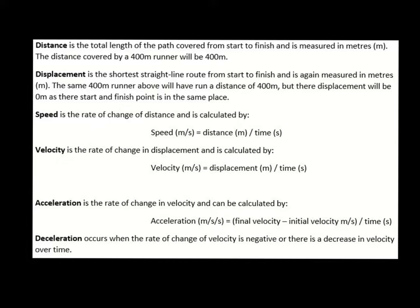Acceleration is the rate of change of velocity, calculated by final velocity minus initial velocity divided by time. Let's say you have a 50 metre swimmer and you time every 10 metres — up to 10, 20, 30, 40, and 50 metres. With each 10 metre displacement, you divide it by the time taken for those 10 metres, giving you five velocities for the 50 metre race.